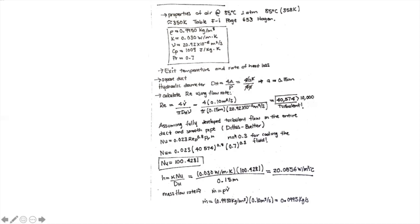I have the Reynolds, I have the Prandtl number read from tables, and I can get the Nusselt number — approximately 100 in this case. Knowing the Nusselt number, I can find the convective heat transfer coefficient: h equals thermal conductivity times the Nusselt number divided by the hydraulic diameter. Remember, all calculations should use the hydraulic diameter since this is a non-circular cross-section. We get around h = 20 W/m²·K.